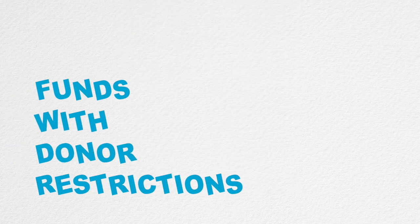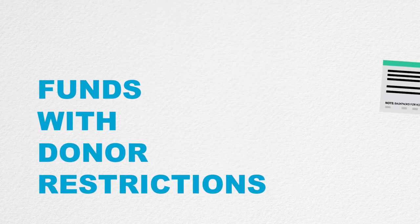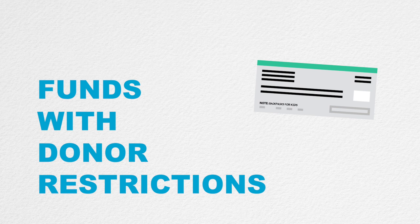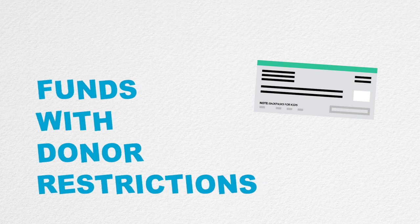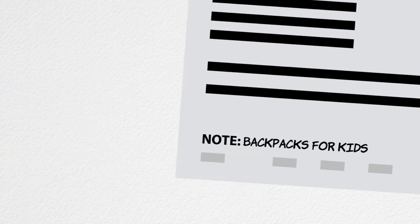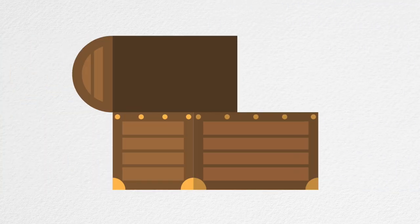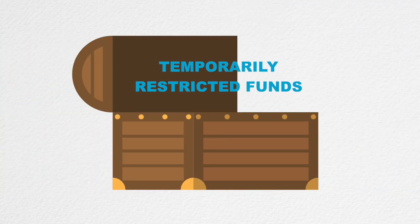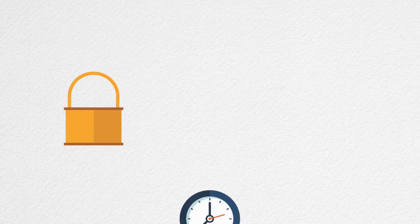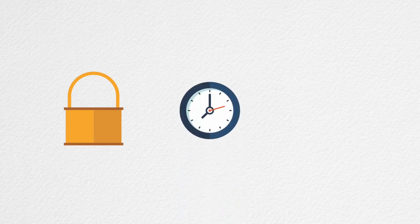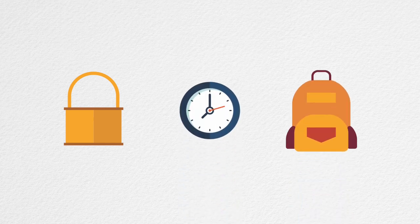The second type of funds are known as funds with donor restrictions. Donors might restrict a donation or grant to use only in your new Backpacks for Kids program, for example. These funds include what used to be termed temporarily restricted funds — restricted to a particular use or time. They have donor-imposed restrictions that can be satisfied by either the passage of a defined period of time, or by carrying out a specific program or project, like the Backpacks for Kids campaign.